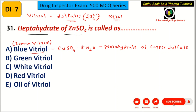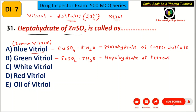Green vitriol is the sulfate of iron — FeSO₄·7H₂O — iron(II) sulfate. Since it contains 7 water molecules, it is called the heptahydrate. Green vitriol is the heptahydrate of ferrous sulfate (Fe²⁺), FeSO₄·7H₂O.